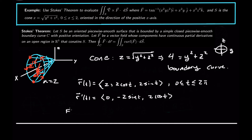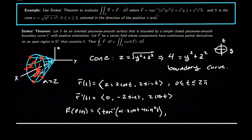Now what is F(R(t))? The x component is arctan(x²yz²), which with x=2, y=2cos t, z²=4sin²t becomes arctan(4 · 2cos t · 4sin²t). Thankfully, that's going to be dotted with R'(t) where the first component of R'(t) is 0, so this term is actually irrelevant. The second component is x²y, which is 4 times 2 cos t. And the last component, x²z², is 4 times 4 sin²t, which is 16 sin²t.